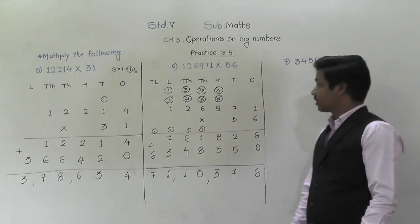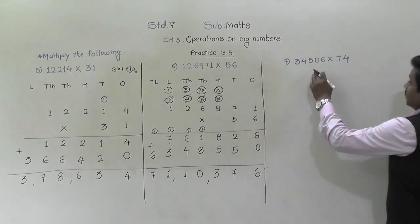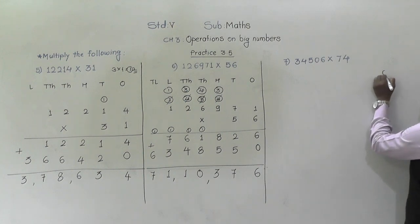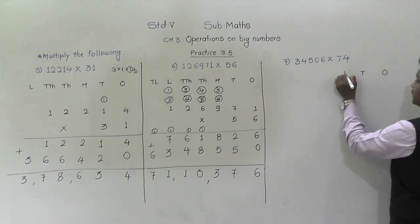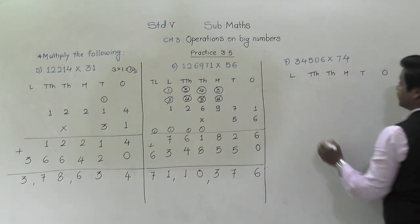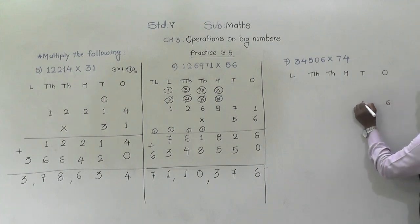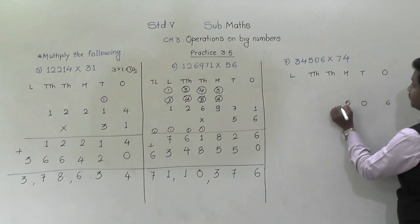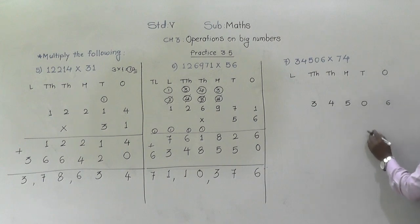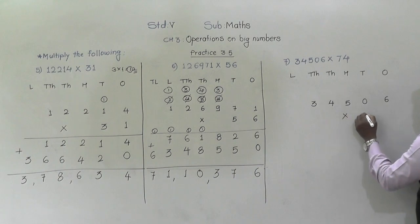One more example of multiplication by a two-digit number. 34,506 into 74. We write the place values: ones, tens, hundreds, thousands, ten thousands, lakh. So 3,4,5,0,6 into 74.